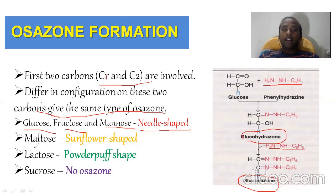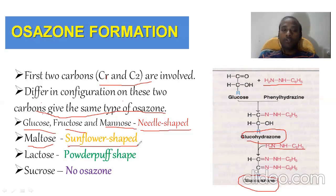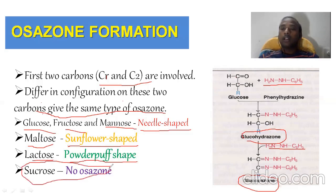Maltose, which is a reducing sugar, forms sunflower-shaped osazones. Lactose, also a reducing sugar, forms powder puff-shaped osazones. One important point: sucrose does not form any kind of osazone because there is no free reducing group present, which is required for osazone reactions.